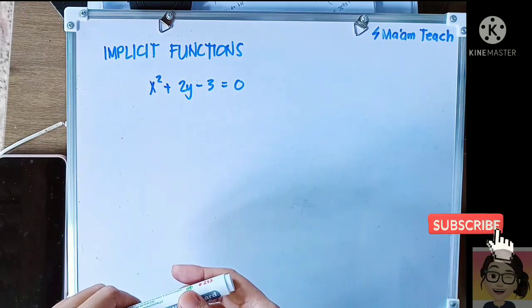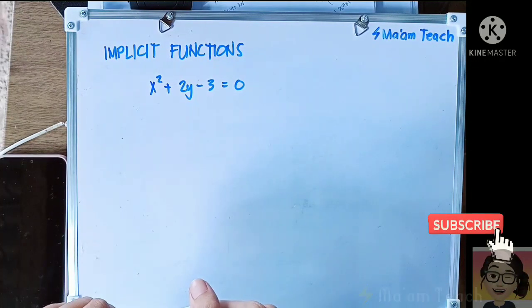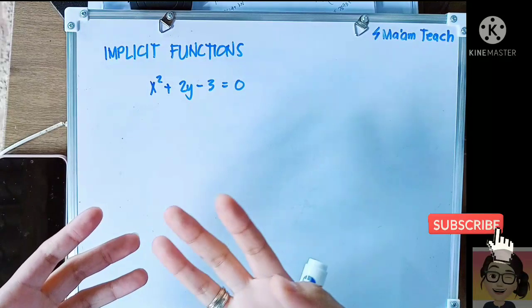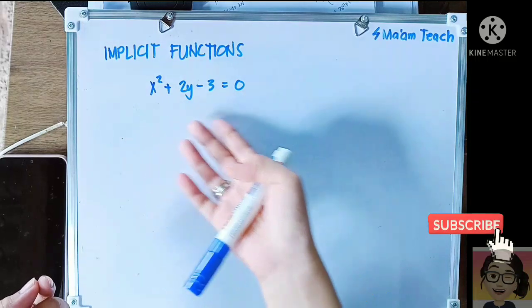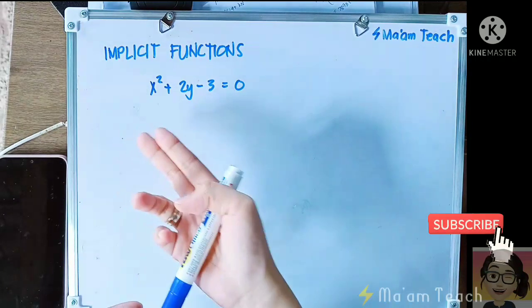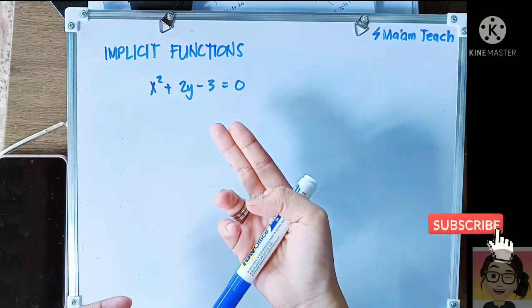Implicit means stated but not clearly. Like for example, this equation x squared plus 2y minus 3 equals 0.